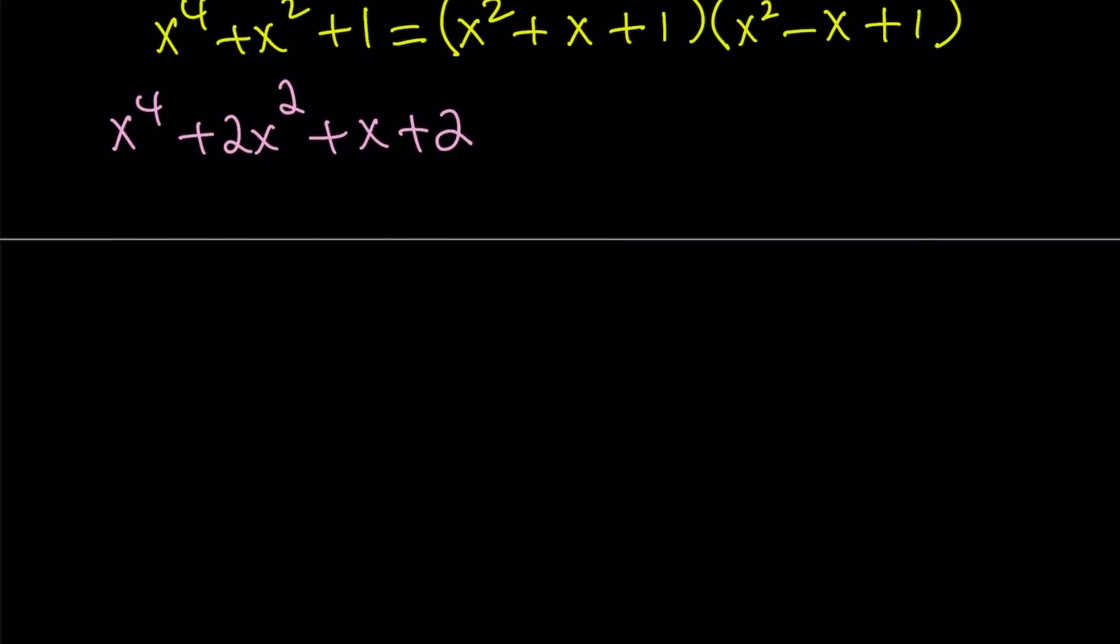Now, notice that this expression can be written as x to the 4th power plus x squared plus 1 plus x squared plus x plus 1. Notice that we broke down the x squared and we broke down the 2. And we got two pieces. And notice that this piece is actually factorable. We just did that. And one of the factors of the first piece is actually the second piece. So, this is going to be factorable by grouping.